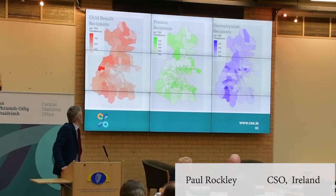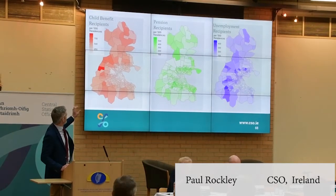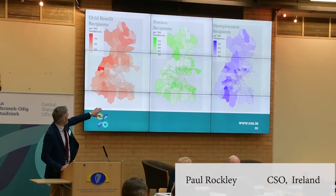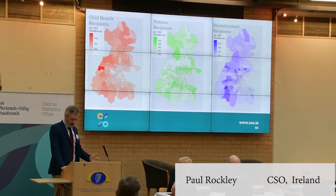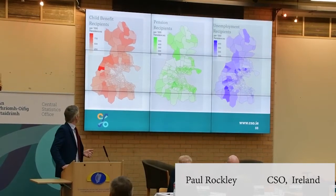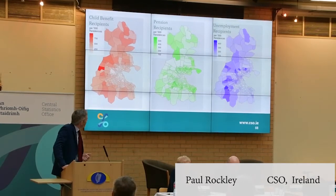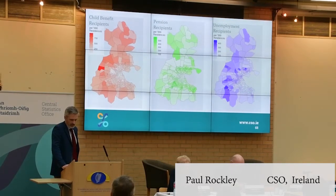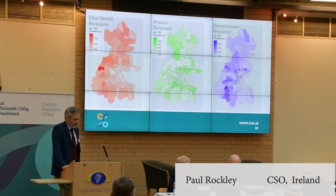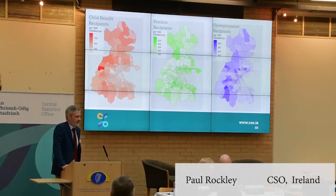The next example uses the exact same data set, except now we are on the NUTS 3 Dublin region. For those who don't know Dublin well, the city centre is shown with the smaller ED polygons in the maps. Again, the darker the color, the higher the proportion of recipients in the area. We have child benefit in red on the left, pensions in green in the middle, and unemployment recipients on the right in that purple-lilac color. I'll give you a few seconds just to take it in yourselves and see if it makes sense with your knowledge of the city.